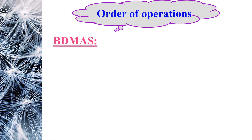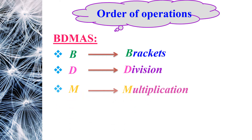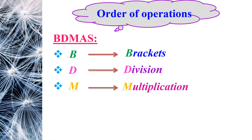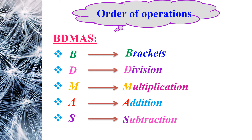Order of operations. To simplify an expression, we have to follow the following order: BDMAS — B for brackets, D for division, M for multiplication, A for addition, S for subtraction.